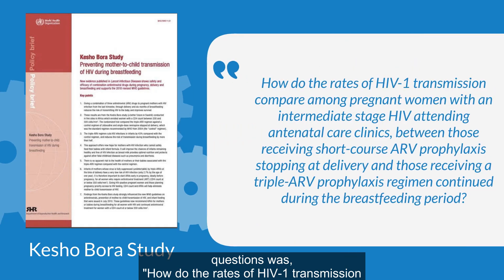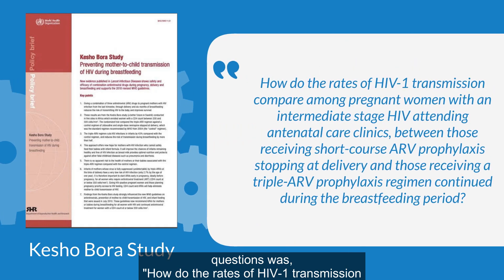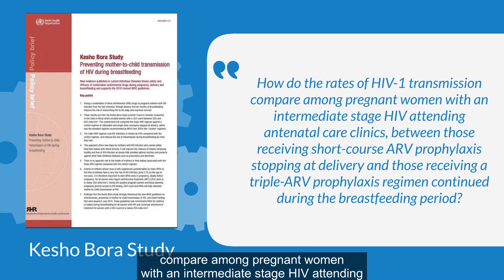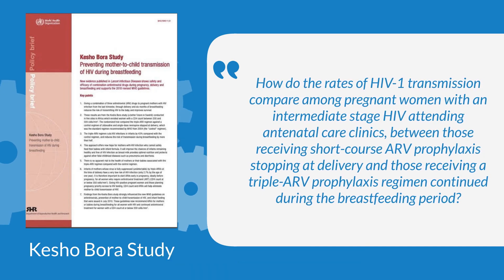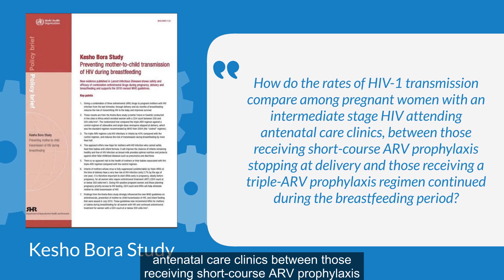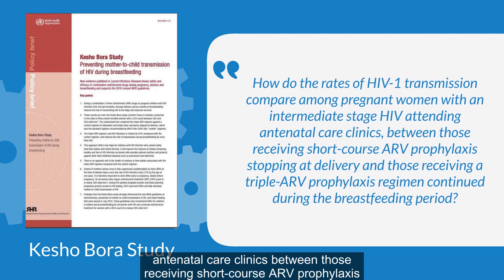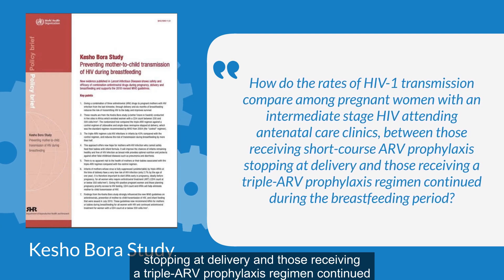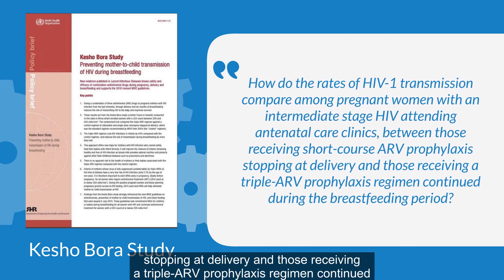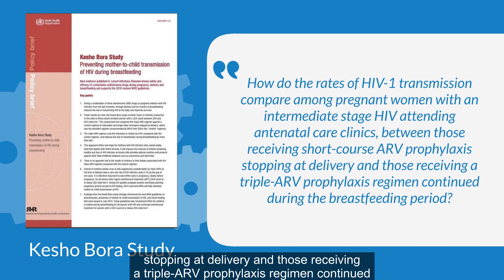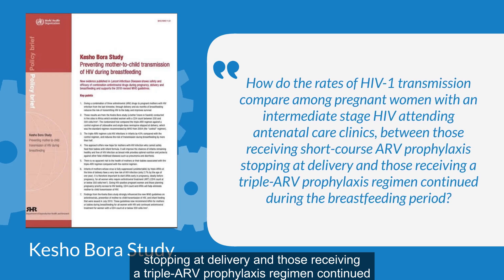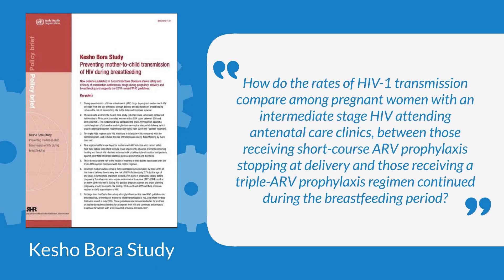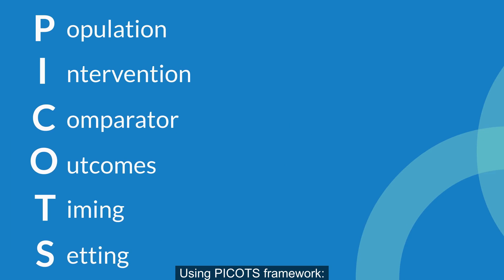How do the rates of HIV-1 transmission compare among pregnant women with an intermediate-stage HIV attending antenatal care clinics, between those receiving short-course ARV prophylaxis stopping at delivery, and those receiving a triple ARV prophylaxis regimen continued during the breastfeeding period? Using the PICOS framework: